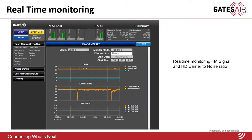For example, say you were driving into work in the morning and you thought you heard the HD drop out. You didn't know if it was just a location you were in or if there was something else going on. You could easily go back to one of these histograms, put in the approximate date and time, and see if the tuner here also experienced the same problem. So it can be a very good tool for troubleshooting.